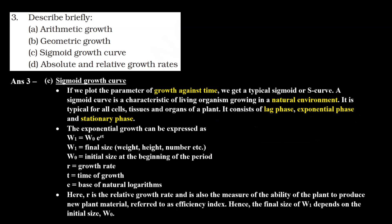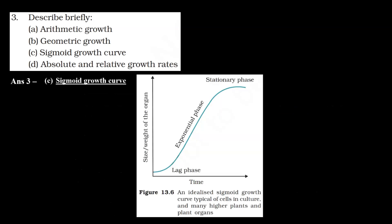Then we had to explain the sigmoid growth curve. We have seen geometric growth has a lag phase, exponential phase, and stationary phase. In a natural environment, an organism's nutrient supply and resources are limited — there are no unlimited resources. So this pattern of lag phase, exponential phase, and stationary phase is a characteristic feature of every living organism. If we plot this growth, we get an S-shaped curve, which we call the sigmoid growth curve.